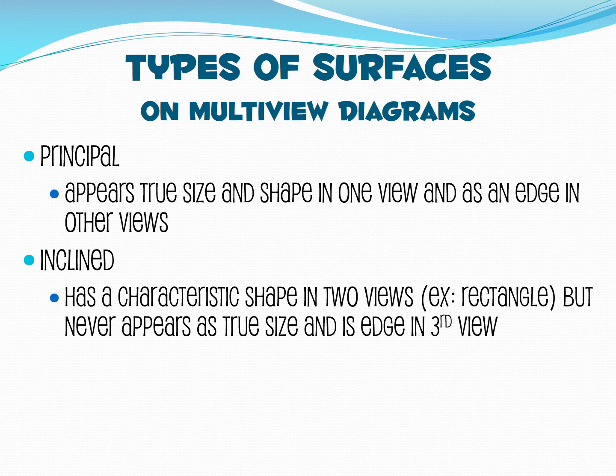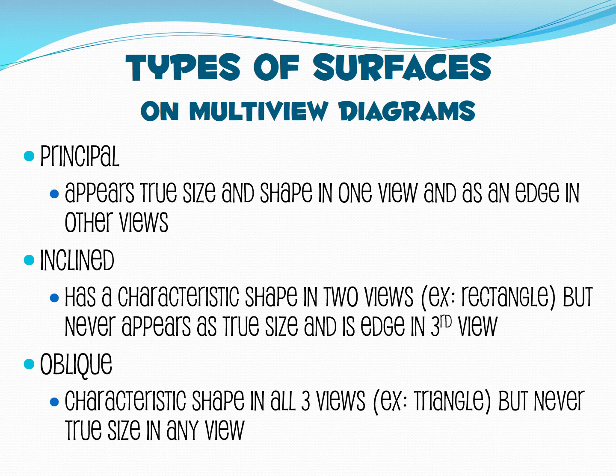Commonly, it'll be a slanted edge in comparison to the other visible lines. Lastly, we have an oblique surface which is a characteristic shape in all three views. In other words, it may appear as a triangle in all three views, but it never actually appears as its true size in any of the views. We'll look at an example that contains all three of these so that you can get a clearer understanding of the difference in those three types of surfaces.